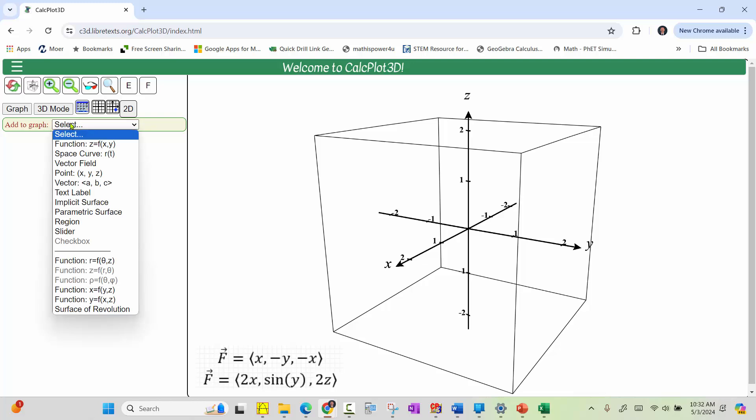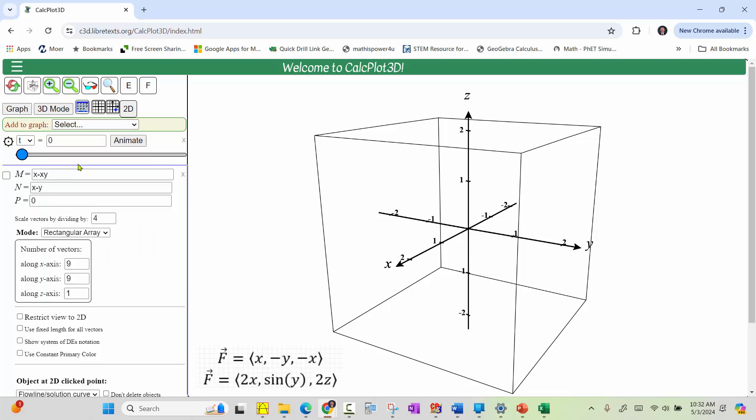Next, from the add to graph drop down menu, select vector field. Turn the vector field on by clicking the box on the left. M, n, and p are the x, y, and z components of the vector field.